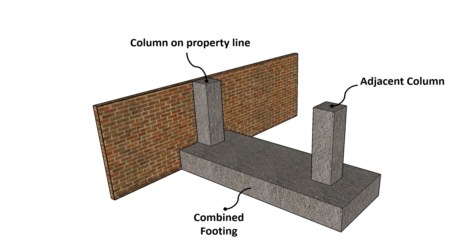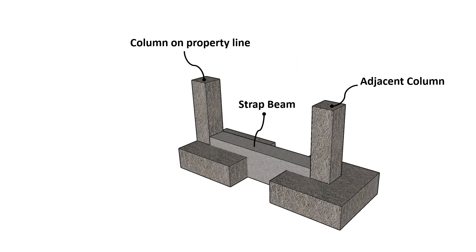When a column is placed along a property line, the footing may be at the edge. Here it is better to combine the footing with the adjacent column's footing, forming a combined footing. Alternatively, the eccentric footing can be connected to the adjacent footing using a strap beam, distributing the load effectively. This configuration is called a strap footing.